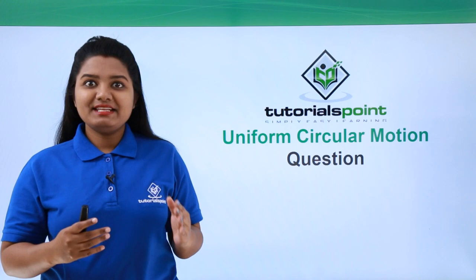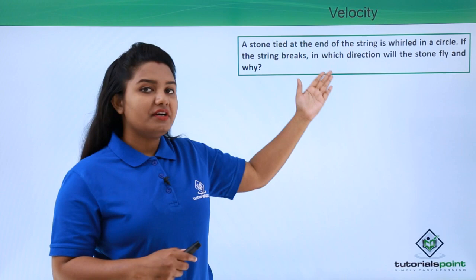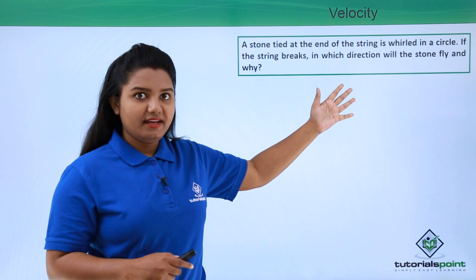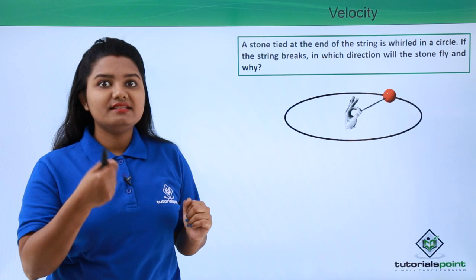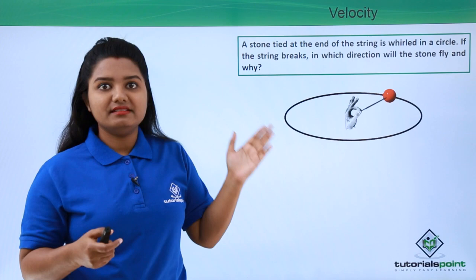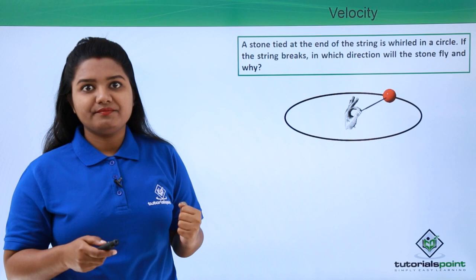In this video we will be discussing a question based on uniform circular motion. The question is: a stone tied at the end of a string is whirled in a circle. If the string breaks, in which direction will the stone fly and why? We have a string with a stone tied to one end, whirled in a circle, and we need to find the direction the stone will fly when the string breaks.